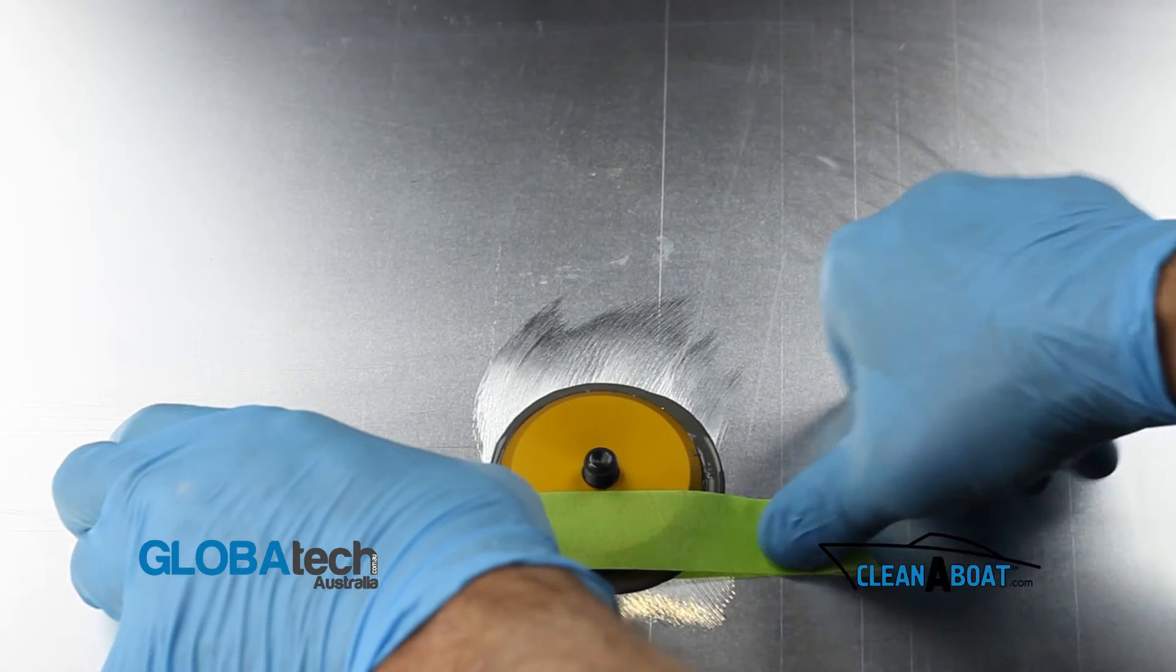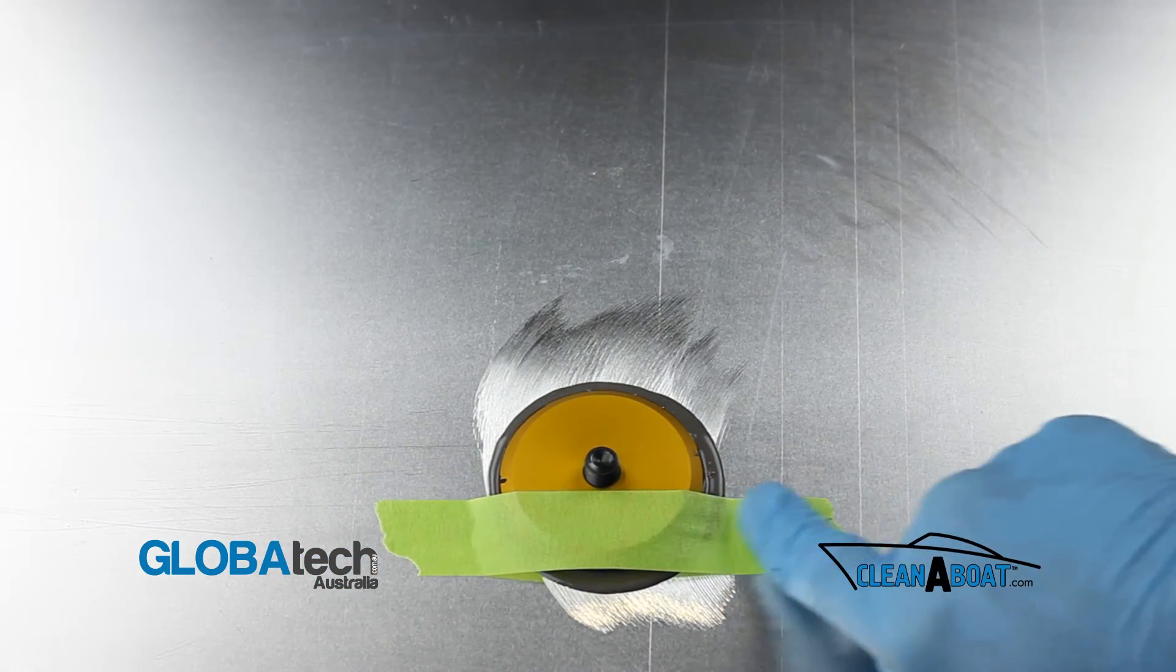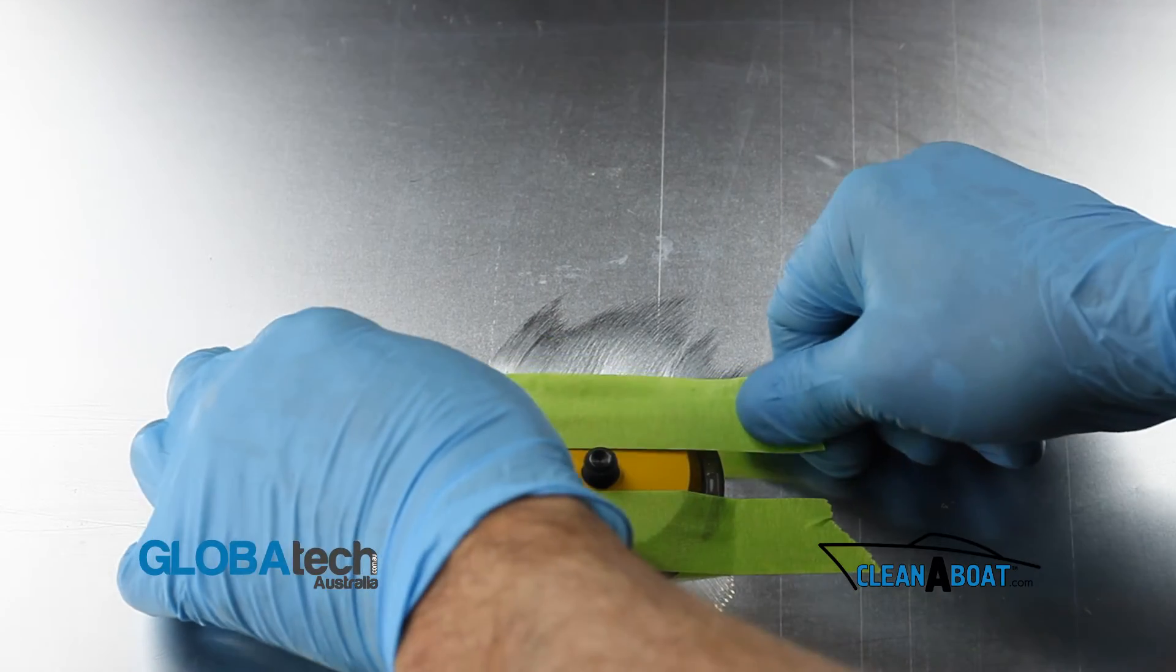Apply masking tape to footprint to hold in position. Allow 24 hours for JB Weld to cure correctly.